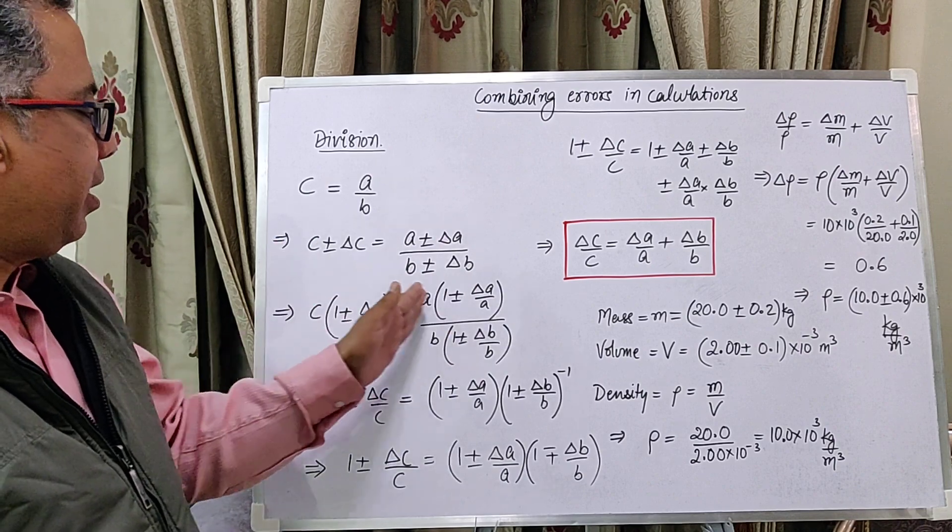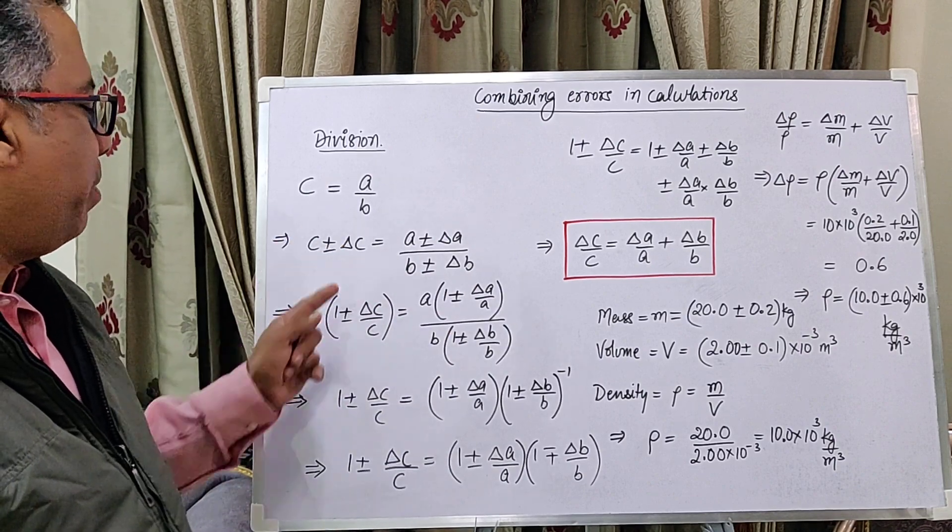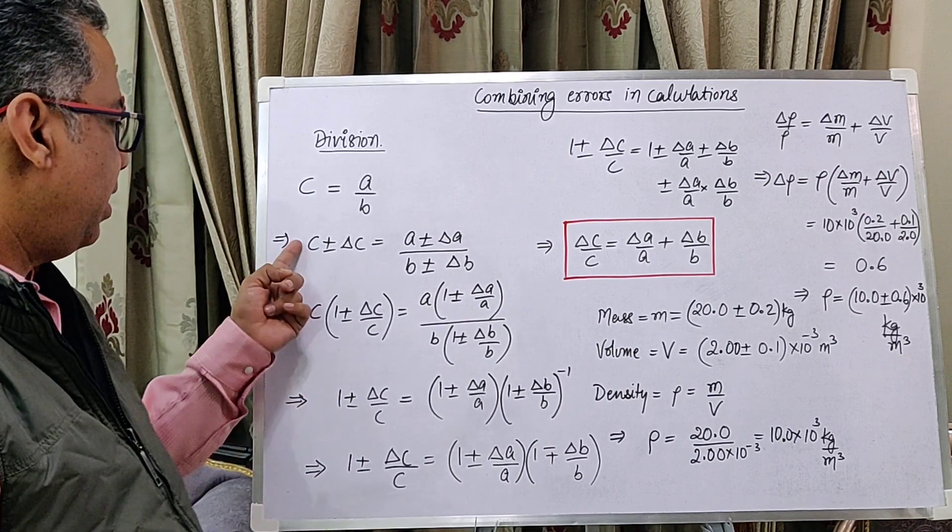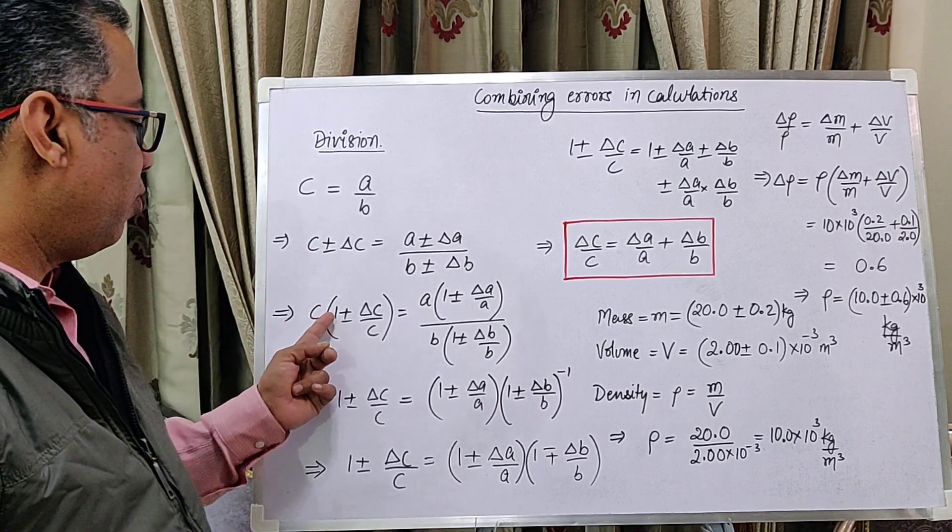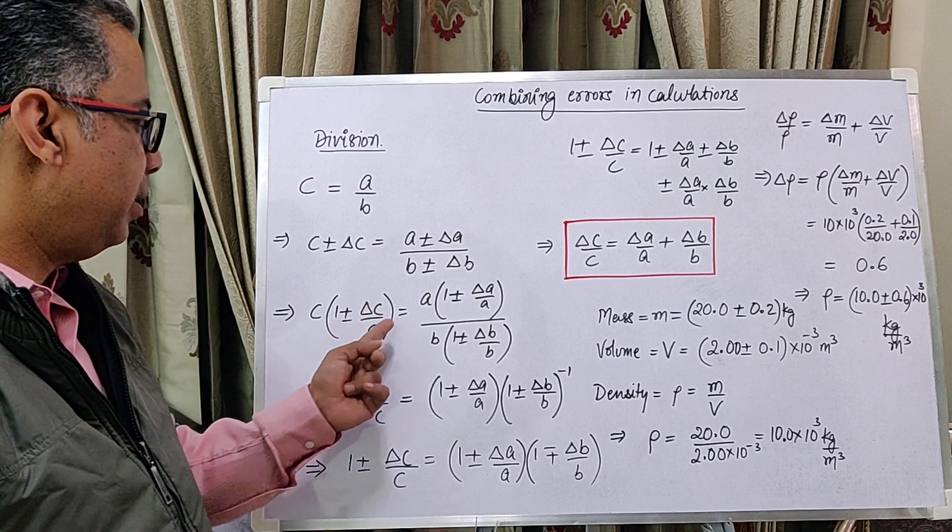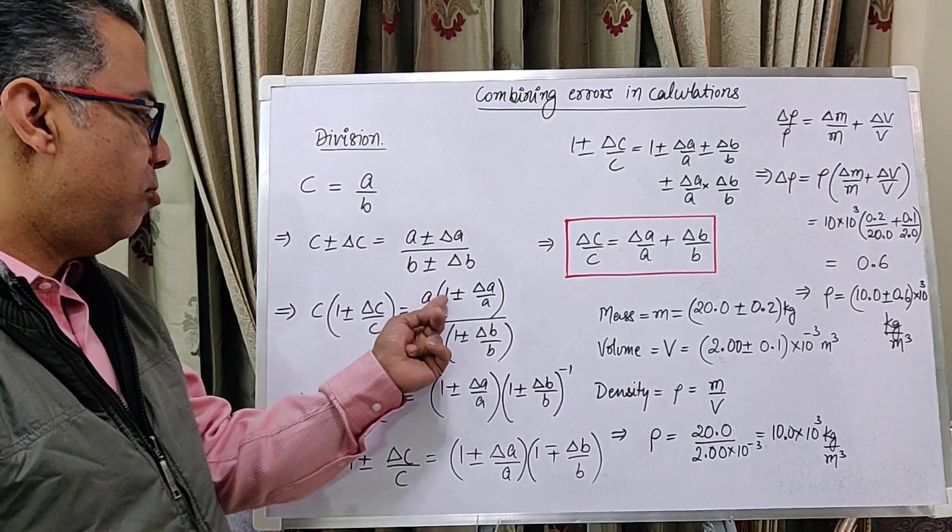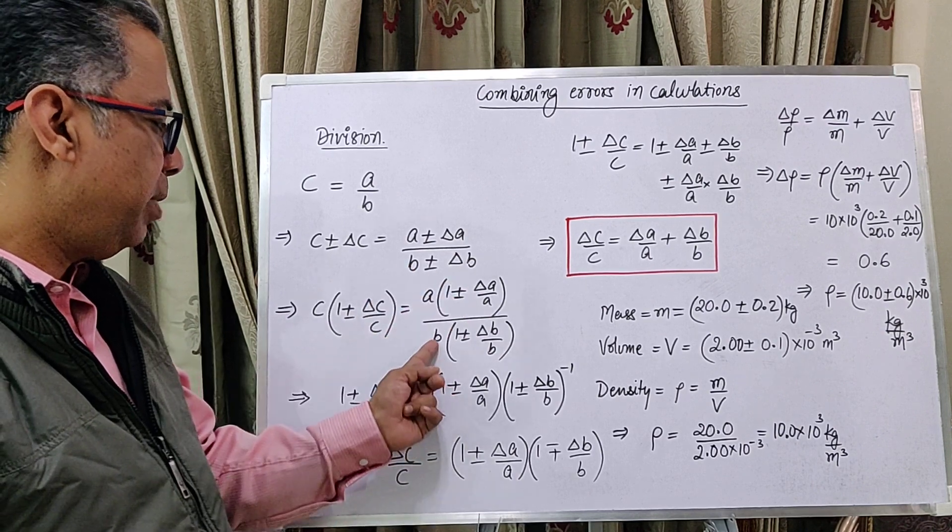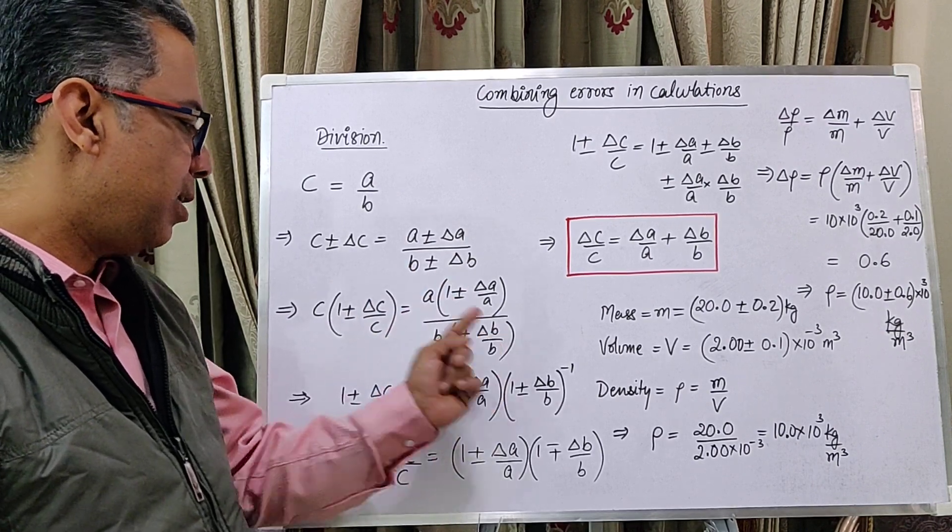In each of these cases, we take common like we did in the previous video. So, C taken common, this becomes C into 1 plus minus delta C by C. This becomes A into 1 plus minus delta A by A, and this becomes B times 1 plus minus delta B by B.